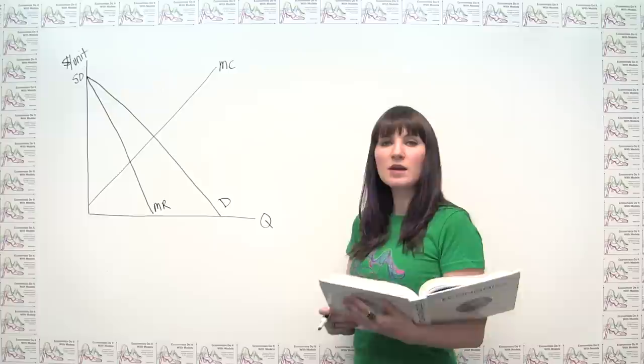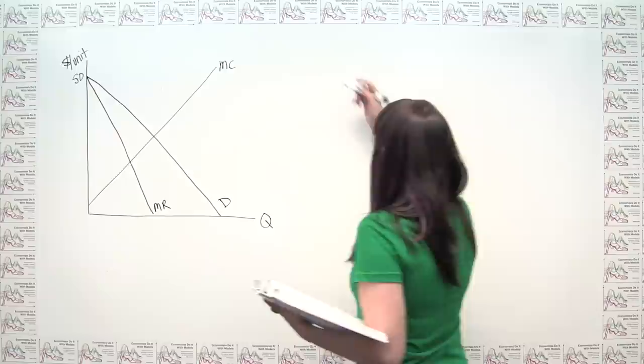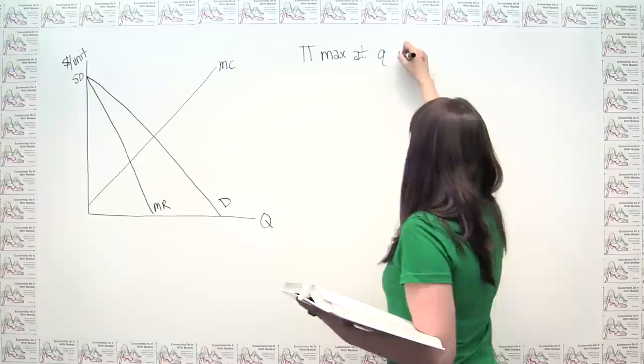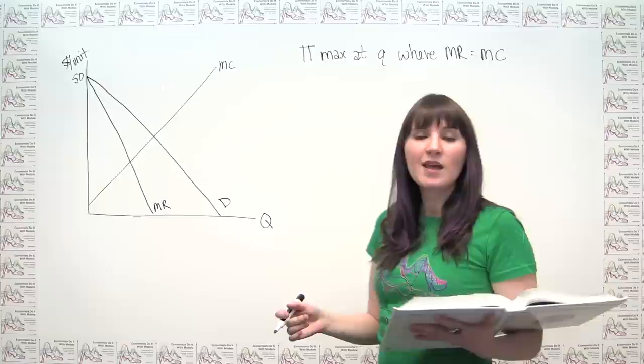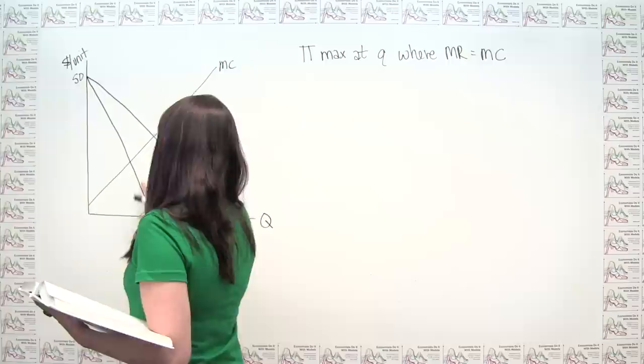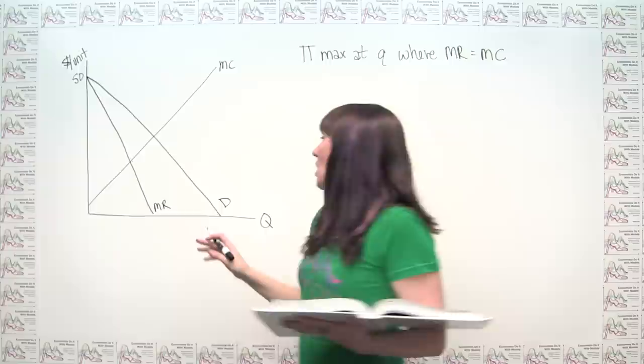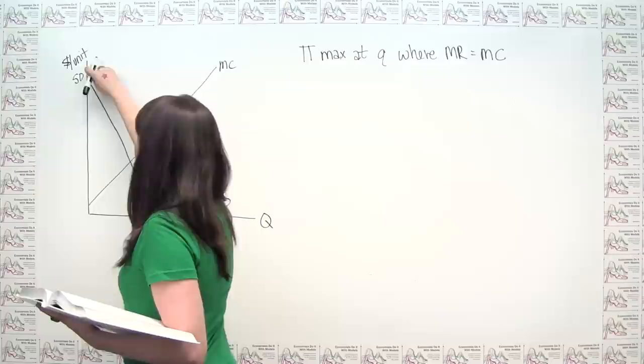Part A of the problem asks: what is the profit maximizing level of output? We have a general rule regarding profit maximization that holds whether or not a firm is a monopoly — profit is maximized at the quantity where marginal revenue equals marginal cost. We usually don't run into weird situations where MR and MC intersect in multiple places.